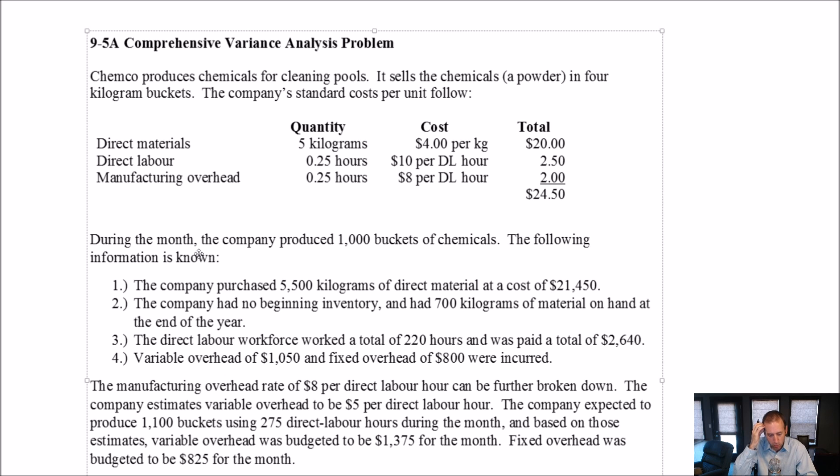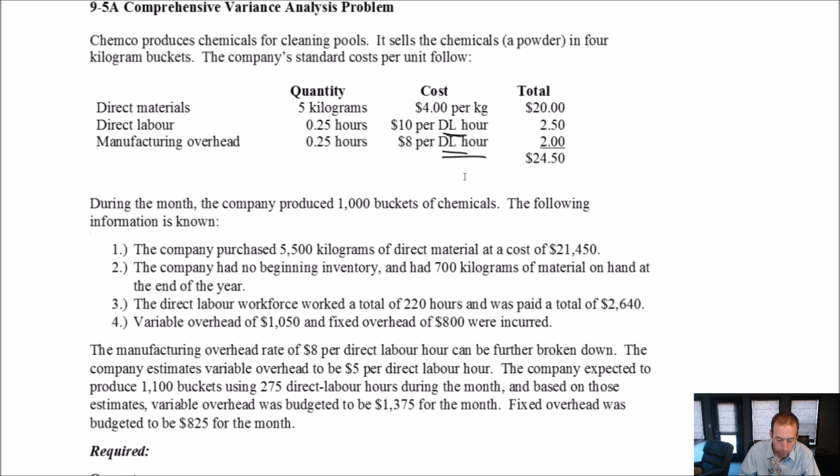So I'm going to start as I read the problem the first time, I'm going to try to do the material variance as we go. So it says Chemgrow produces chemicals for cleaning pools. It sells the chemicals, a powder, in four kilogram buckets. The company standard costs per unit follow. So when I'm thinking about filling in those charts, I'm thinking okay, a lot of SQ and SP standard quantity, standard price information is going to be found here. I'm also noting that overhead looks like it's driven by direct labor hours.